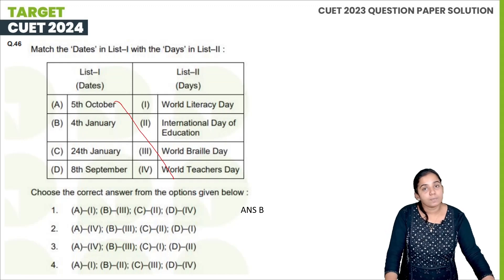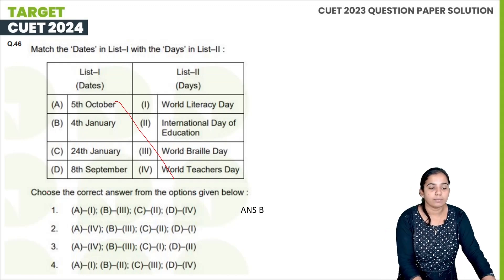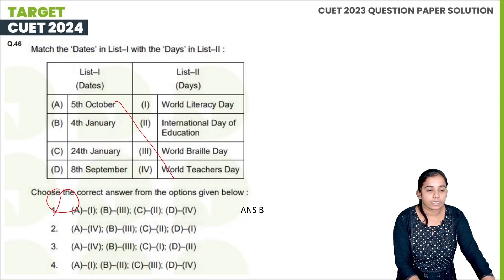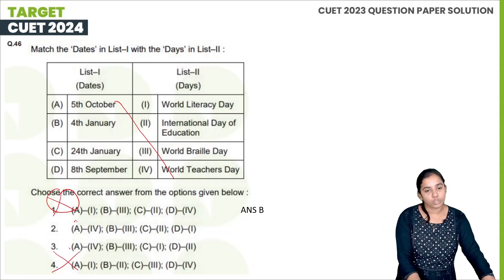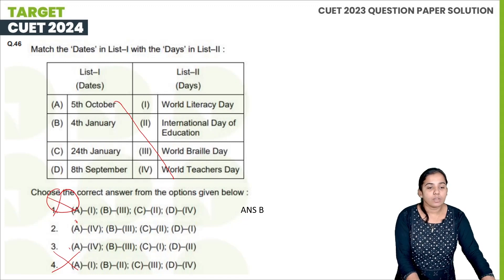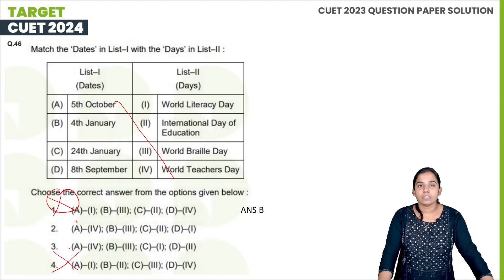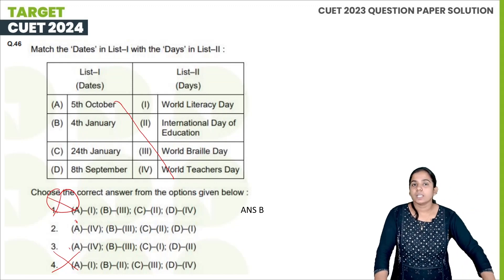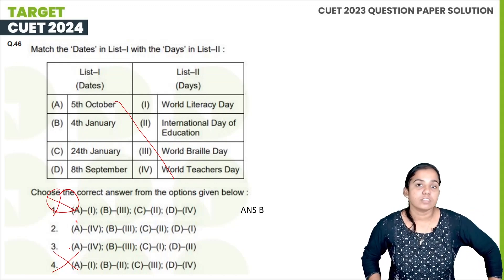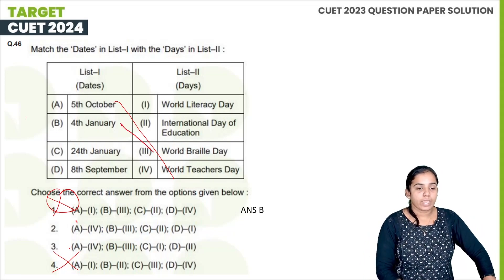World Braille Day — we can start with the first option and last option. November 4 — actually, Braille Day is celebrated on the 4th of January.